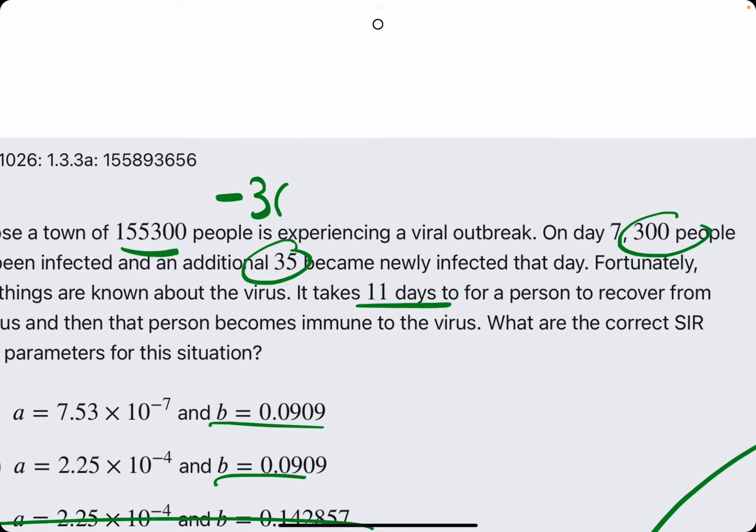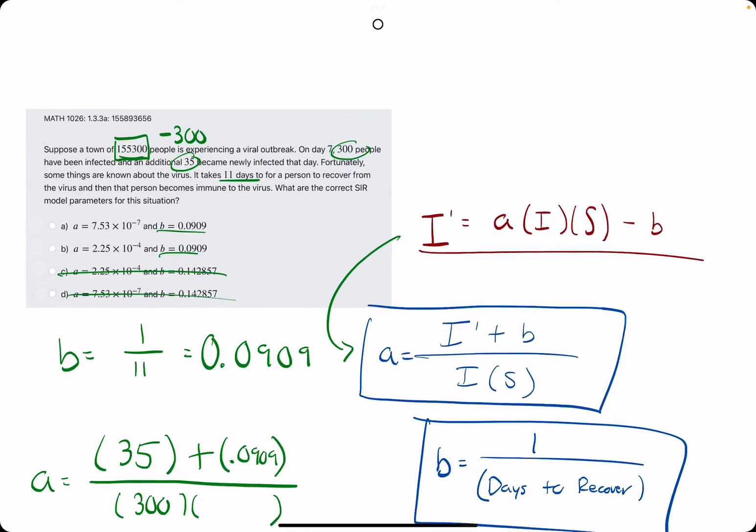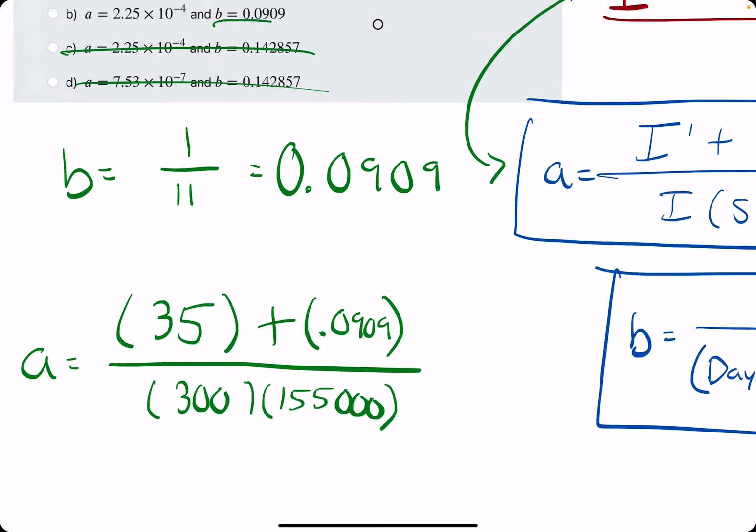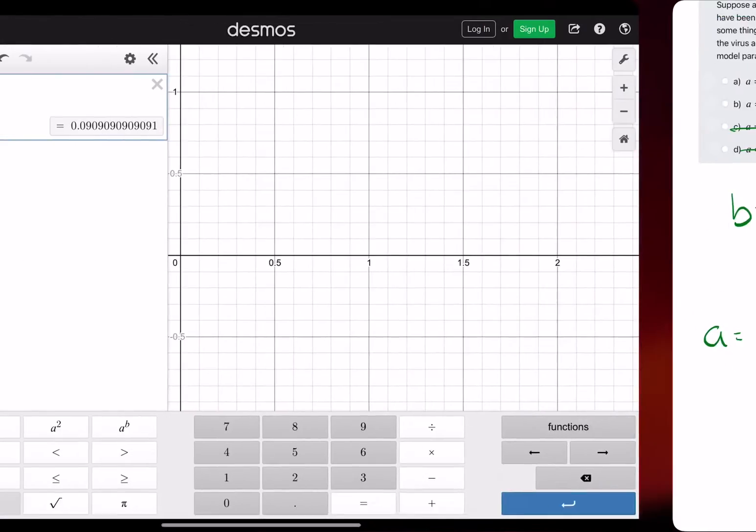And then we will always find the susceptible by taking the initial population and subtracting the amount that were infected. So we will have 155,300 minus 300. So it oftentimes just leaves us with the nice clean thousands number. So we have our setup for A. Let's just calculate it.